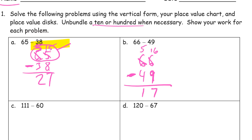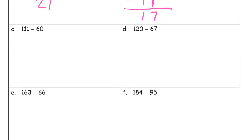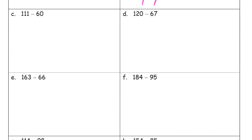You have to have all of this shown up here. These are called crutch marks, where you show that you unbundled this 10, you have 5 left, and you added it to the 10 more ones to get 16 ones. You have to have all of this up here. If you're trying to do this in your head, mostly it doesn't work. You have to show these marks — otherwise you're not doing it vertically. Watch me do it step by step, then pause and try it yourself.